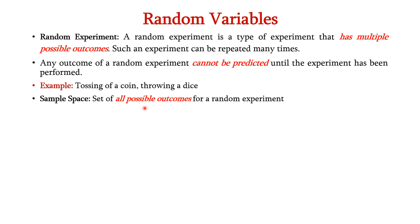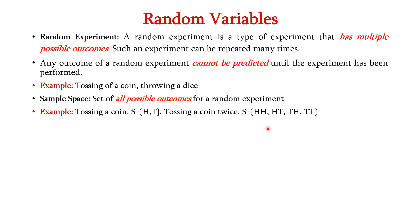Sample space is the set of all possible outcomes for a random experiment. For example, in tossing a coin, the possible outcomes will be head and tail. If we are tossing the coin twice, the possible outcomes will be head-head, head-tail, tail-head and tail-tail.